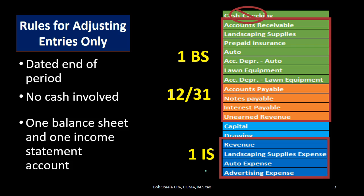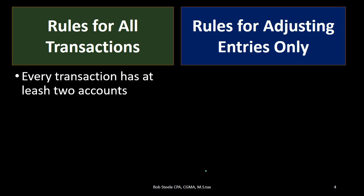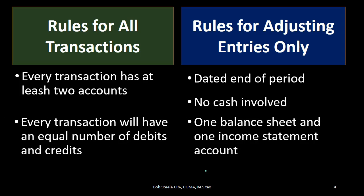We'll talk more about the reasons for these rules in a future presentation. To recap: rules for all transactions including adjusting journal entries are — every transaction has at least two accounts affected, and every transaction will have an equal number of debits and credits. Rules for adjusting entries only: dated at the end of the period, no cash involved, and one balance sheet account and one income statement account. We're going to use these rules to construct a new thought process for the adjusting entries, which will really help us create them even if we don't know exactly what the journal entry is doing or why.